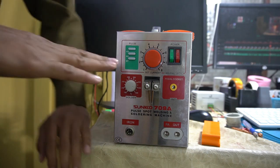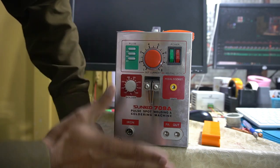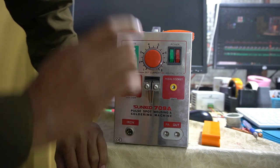Assalamualaikum. Today we will see spot welding machine which is 709A. We will quickly review all the features and functions in a small video.